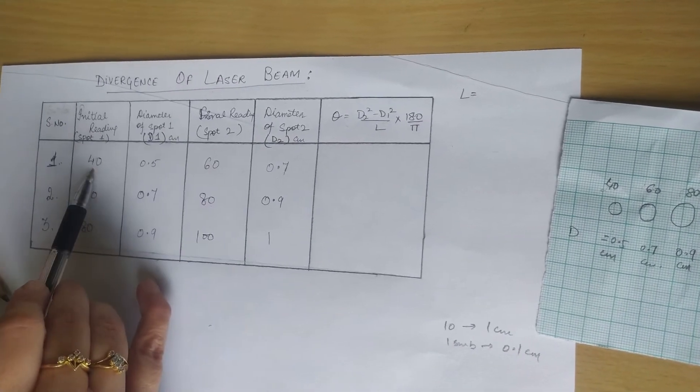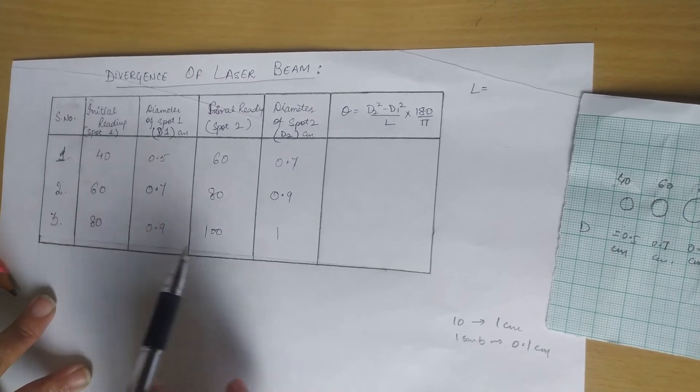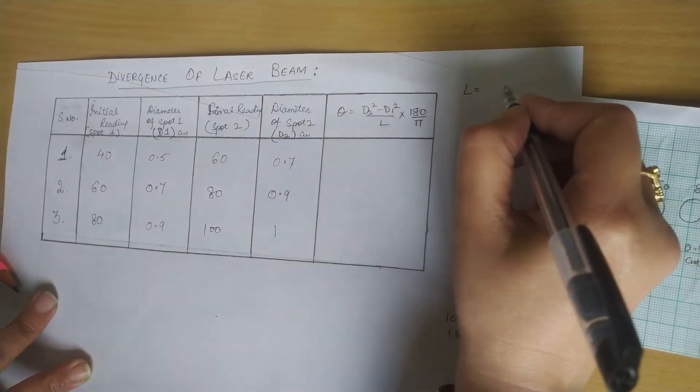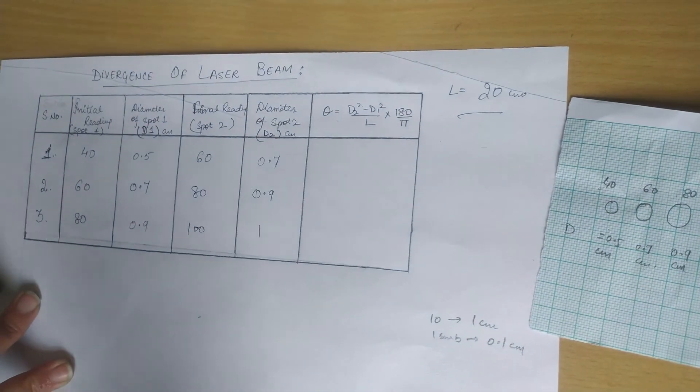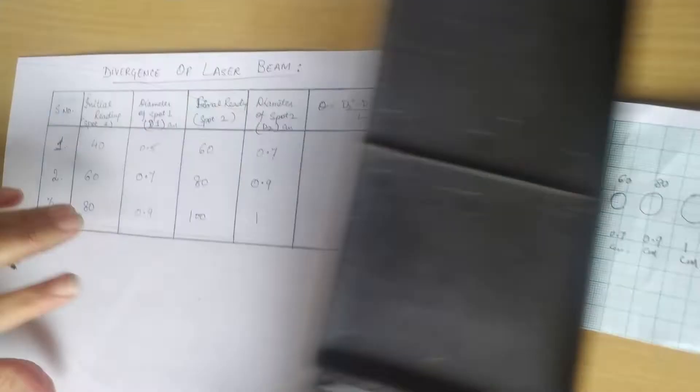Since 60 minus 40 is 20, 80 minus 60 is 20, and 100 minus 80 is 20, we have considered L as constant in this reading at 20 cm.